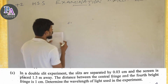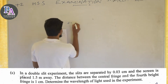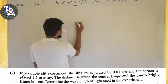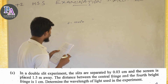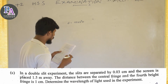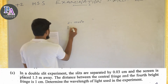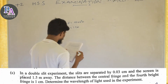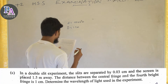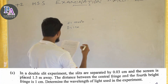D is equal to 0.03 into 10 raised to minus 2 meters. The screen is placed 1.5 meters away. Capital D equals 1.5 meters. We need to find the distance between the central fringe and the fourth bright fringe.